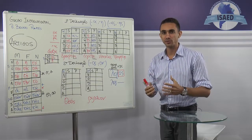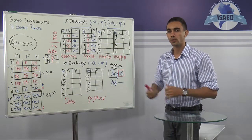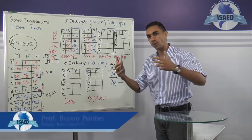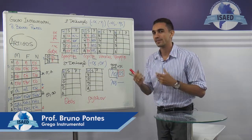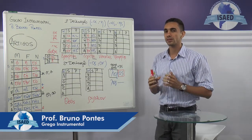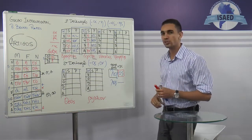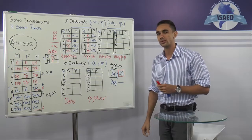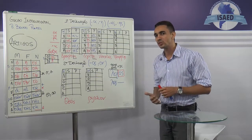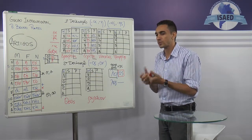Bem, meu amado, você que está de volta à aula da Isaede no grego instrumental, com o pastor Bruno Pontes, vamos dar continuidade à nossa forma de declinar as palavras da primeira declinação grega. Lembrando que sempre que olharmos as declinações, temos que observar as terminações, que são as desinências de caso. Essas terminações vão nos trazer à tona a lembrança daquilo que vem a ser a forma de traduzirmos essas palavras.